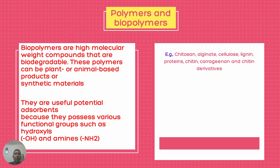Then come polymers and biopolymers. Biopolymers are high molecular weight compounds that are biodegradable. These polymers can be plant- or animal-based products or synthetic materials. They are useful potential adsorbents because they possess various functional groups such as hydroxyl and amine groups. Typical examples include chitosan, alginate, lignin, cellulose, protein, chitin, and chitin derivatives.